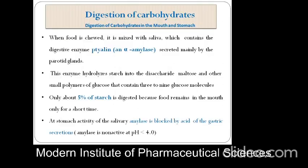Digestion of Carbohydrates in the mouth and stomach. Digestive enzymes are secreted by the parotid gland, which is present in the pharynx. These enzymes hydrolyze starch into the disaccharide maltose. Polysaccharides are converted into disaccharides such as maltose. In other small polymers of glucose, it contains 3 to 9 glucose molecules, such as oligosaccharides. Only about 5% of starch is digested because food remains in the mouth only for a short time.